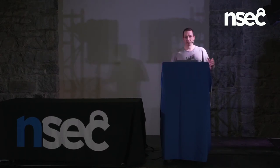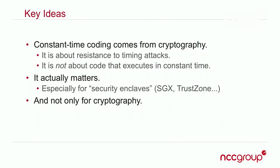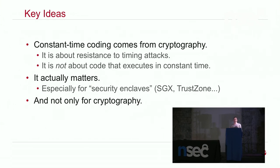Here are the key ideas. One is a rough definition of what constant-time coding means — and it's actually not about things going in constant time, so it's a misnomer. It's about resistance to a class of attack known as timing attacks. It actually matters; it's not just an academic toy. It is becoming more and more relevant, especially considering the new trend for security enclaves such as SGX, new Intel processors, or ARM TrustZone. And it is not specific to cryptography — it is a larger matter.